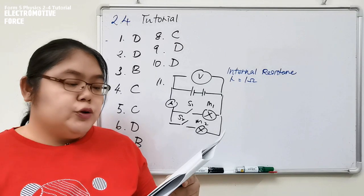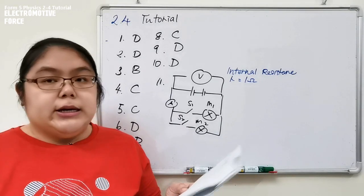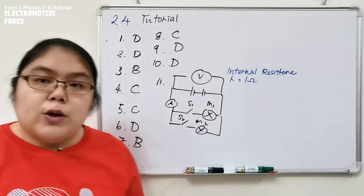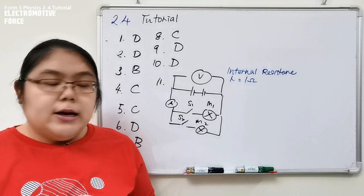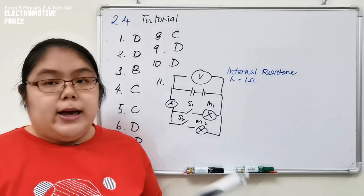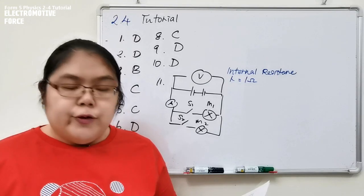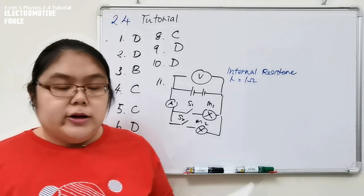When switch 1 and switch 2 are open, meaning open circuit, the reading of the voltmeter is 12 volt. So we understand when open circuit there's 12 volt. Actually it stands for EMF. So the answer for A is 12 volt. They asked about EMF, so 12 volt.